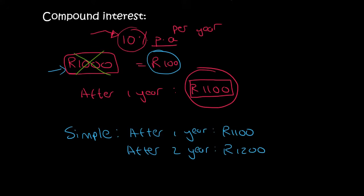With compound interest the bank says oh wait, this person has a thousand one hundred rand. We should give them 10% of that. And 10% of a thousand one hundred is a hundred and ten rand. And so now all of a sudden you have a thousand two hundred and ten rand. See the difference?